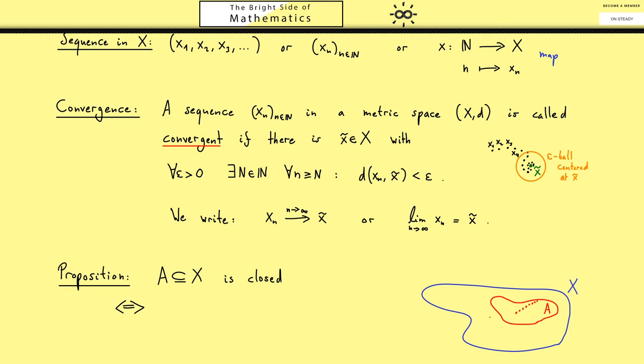This is fitting for our visualization because closeness means that this boundary we see here already belongs to the set A. Writing it down gives us then for every convergent sequence AN where AN is just an element in capital A.